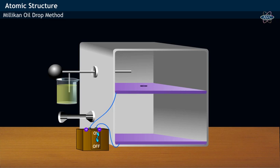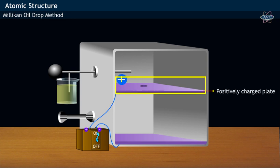The setup of Millikan's experiment consisted of two plates which are positively charged plate and negatively charged plate. These two charged plates are in turn connected to a battery.